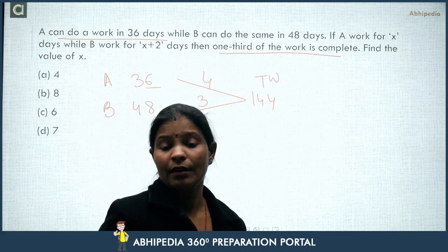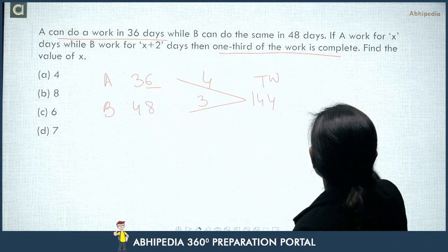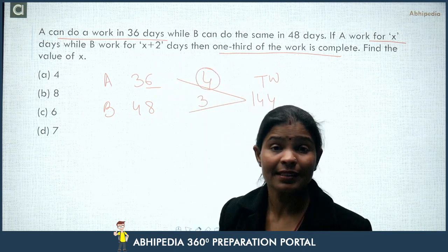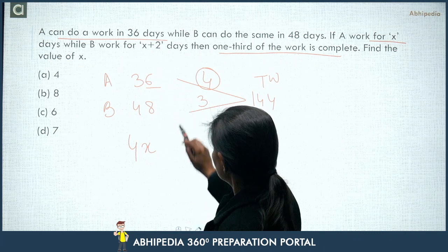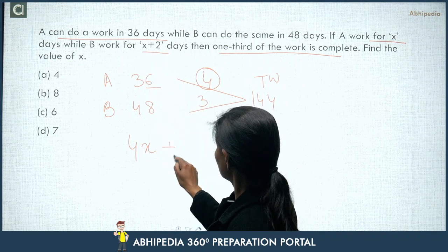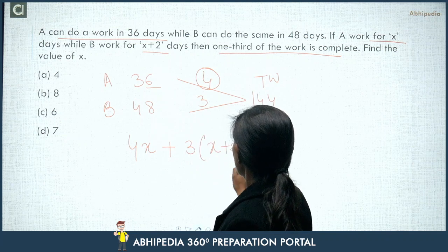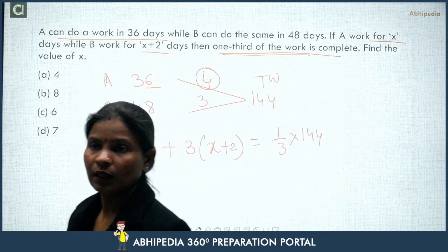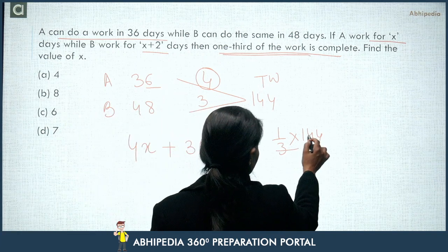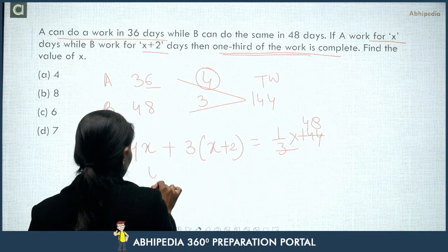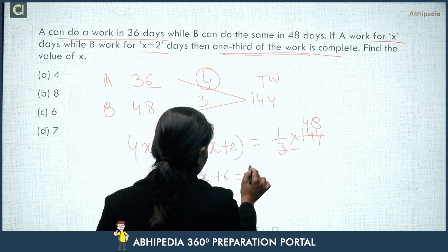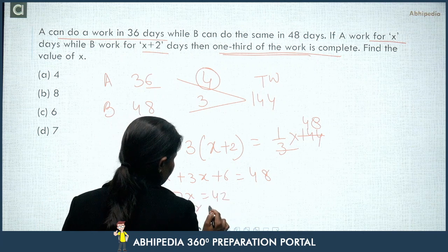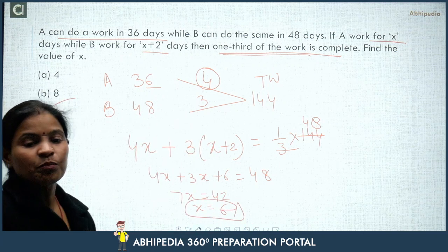Next question: A can do work in 36 days, B in 48 days. Total work LCM(36,48)=144, A's efficiency = 144/36 = 4 units/day, B's efficiency = 144/48 = 3 units/day. If A works for x days and B works for x+2 days, then one third of the total work will be completed. So: 4x + 3(x+2) = 144/3 = 48. That gives 7x + 6 = 48, so 7x = 42, meaning x = 6. Answer: option C, x = 6.